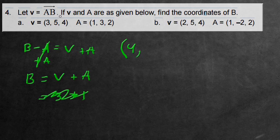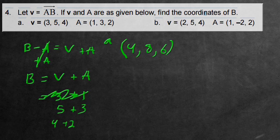If we do the same thing with the second coordinate, the 5 and the 3, the V value is 5, add the A which is 3. That means the middle coordinate is 8. The last one would be 4 add 2, you just go through it like that, and it's going to be 6. So this is how we solve the first question.